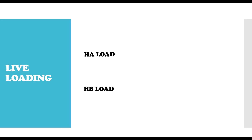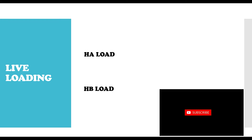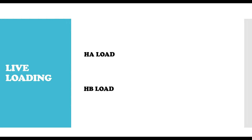One of the most difficult parts of bridge design is the loadings, because the loading is a little bit more technical than other kinds of structures. I want to make a video on the live loading, which is why we are here. The HA loading is divided into two parts: we have the HA UDL and we have the HA KEL. Both of these loads are applied together but they are different, even though both represent the effect of traffic on the highway.